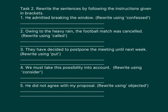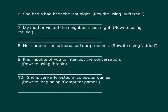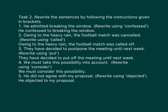Task two: Rewrite the sentences by following the instructions given in brackets. Task two is displayed across two screens — stop the video to work on the first screen, and when you've finished resume play to display the second screen. Here are the answers. Number one: 'He admitted breaking the window' / 'He confessed to breaking the window.' Number two: 'Owing to the heavy rain, the football match was cancelled' / 'Owing to the heavy rain, the football match was called off.'